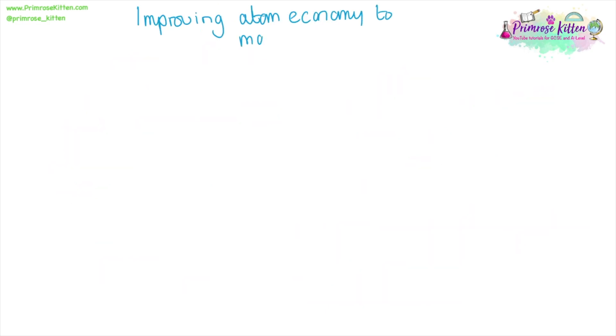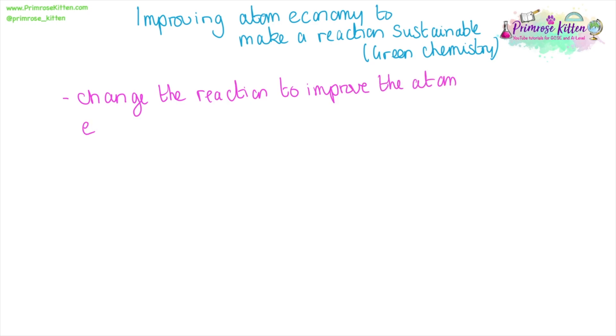We can improve the atom economy of a reaction to make it more sustainable. You might see this referred to as sustainable chemistry or green chemistry. As we saw on the last slide, you can change the reaction to improve the atom economy. If it's a multi-step process, you might want to look at removing the number of steps, changing a couple of the steps so that there are fewer steps, so less is lost.